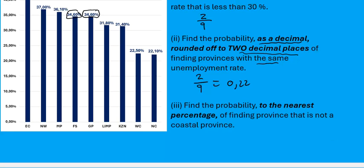Find the probability to the nearest percentage of finding a province that is not a coastal province. Remember, we have coastal provinces and we also have inland provinces. There are four coastal provinces — those are the provinces by the sea or ocean: Western Cape, Eastern Cape, KwaZulu-Natal, and Northern Cape. Those four are coastal provinces, which means you will find a sea or an ocean in those provinces. But the other five are not coastal provinces.